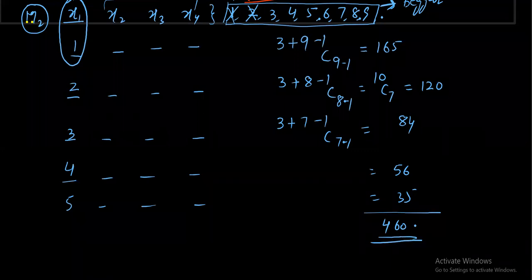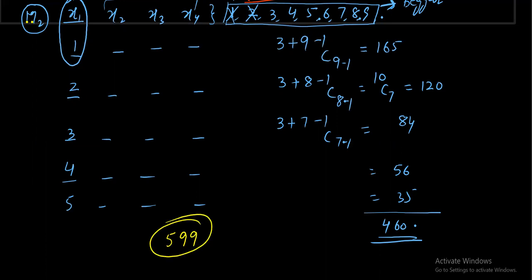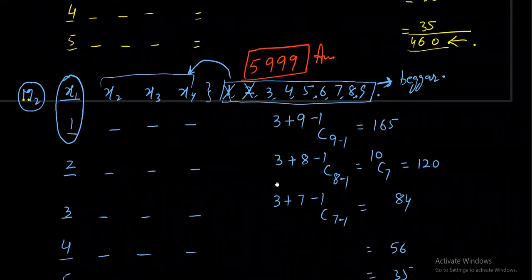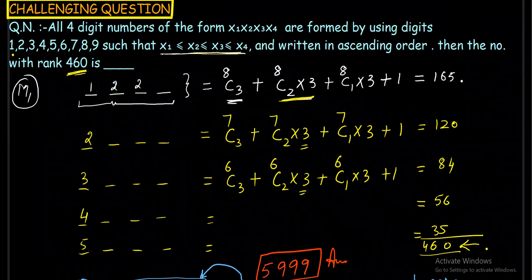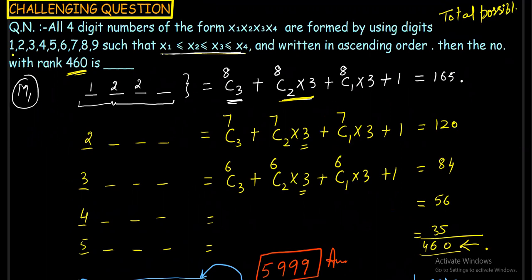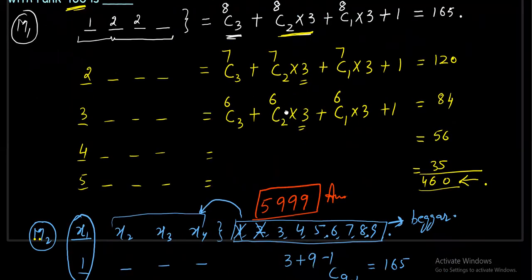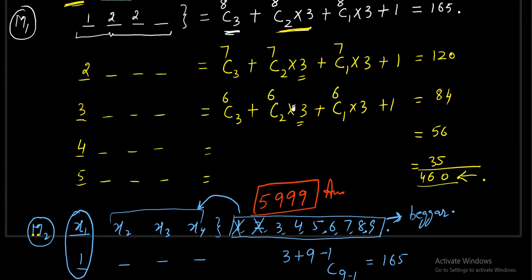So the number at rank 460 is 5999, confirmed by both methods. As a practice question, try finding the total possible four-digit numbers satisfying the same condition. I hope you enjoyed both methods — especially the beautiful use of Beggar's Method in a dictionary problem. Like, subscribe, and don't forget to hit the bell icon. Bye bye for now, see you in the next video!